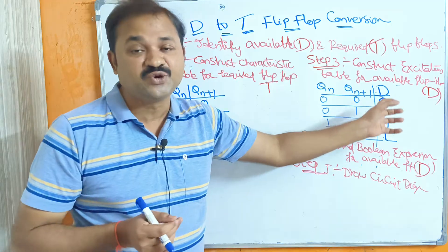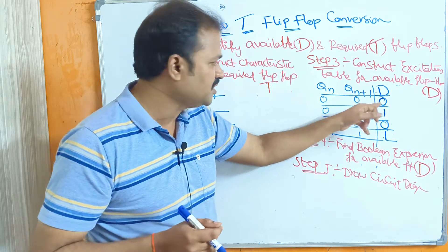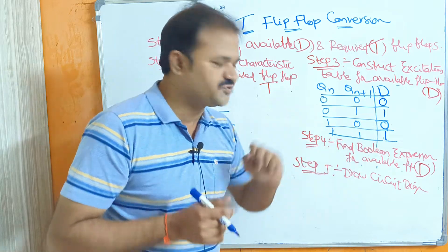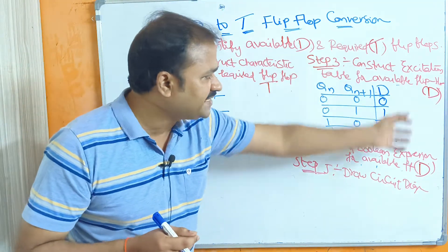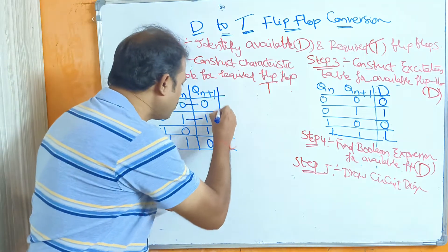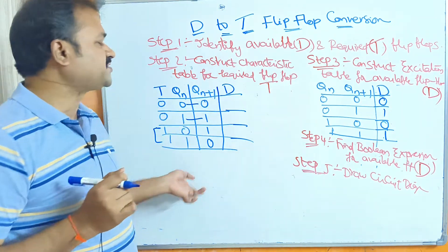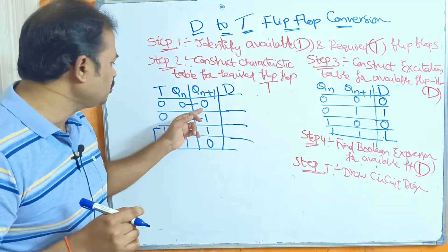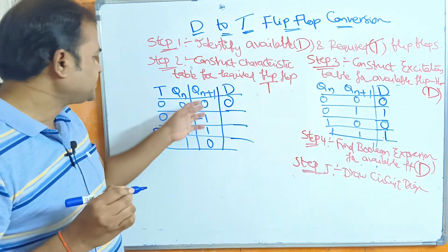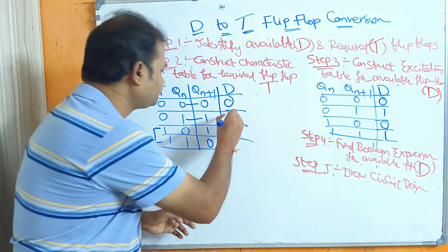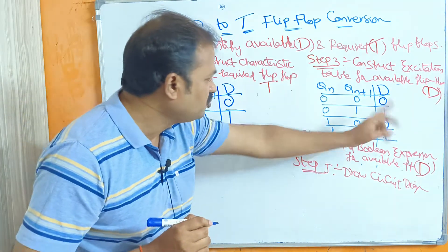For the D flip-flop excitation table, we simply write the Qn+1 values as D. So D = 0, 1, 0, 1 for the four combinations. Next, we add a D column to the characteristic table and fill it based on Qn and Qn+1 values: when Qn=0, Qn+1=0, D=0; when Qn=0, Qn+1=1, D=1; when Qn=1, Qn+1=0, D=1 — wait, output is 1; when Qn=1, Qn+1=0, D=0.